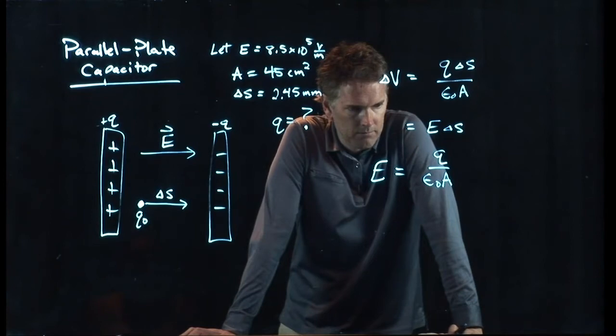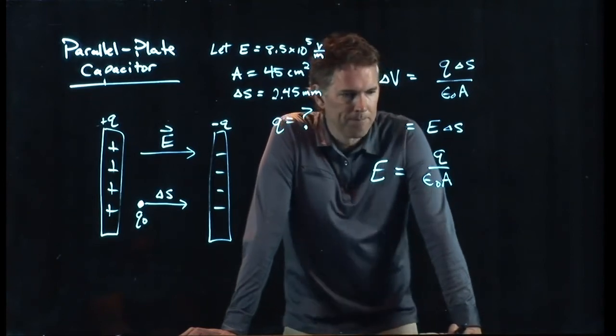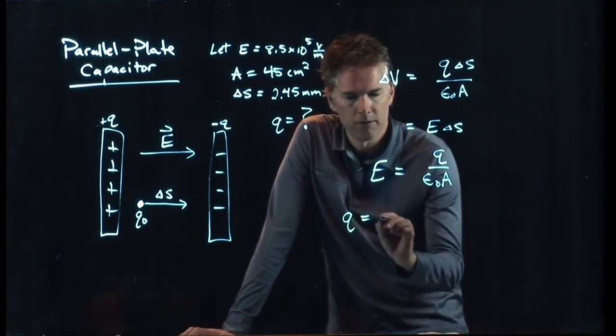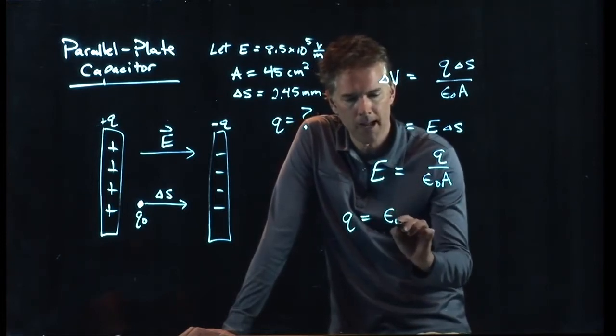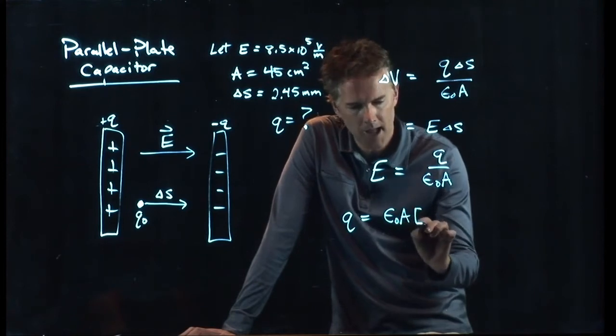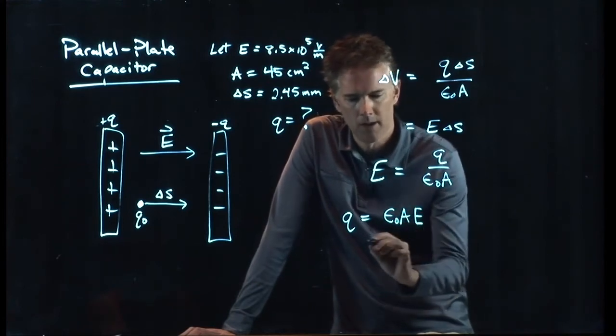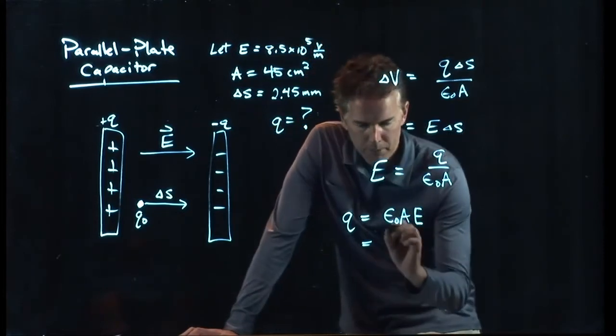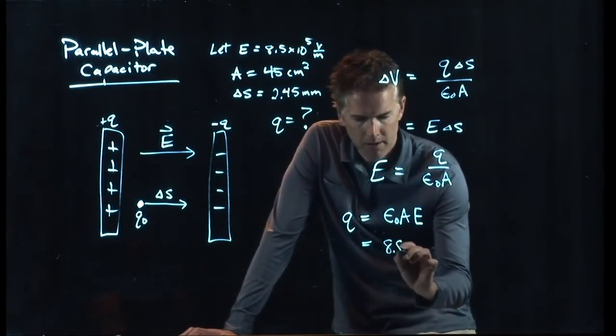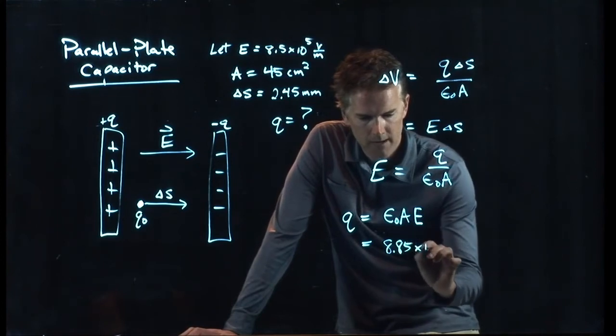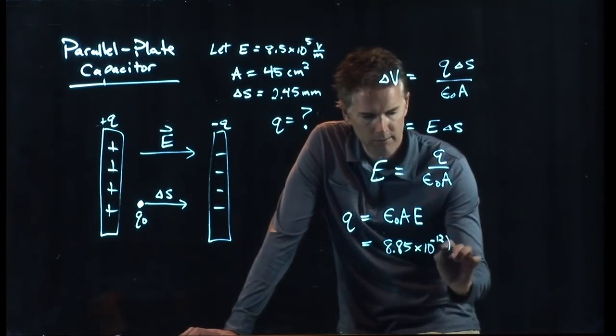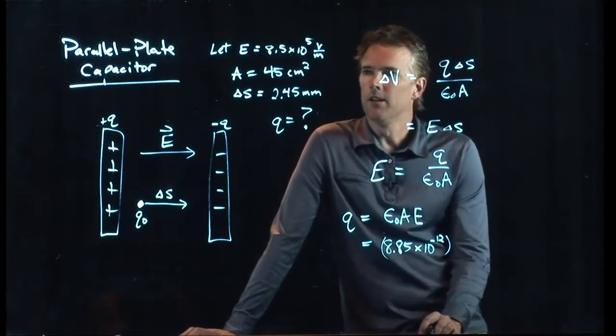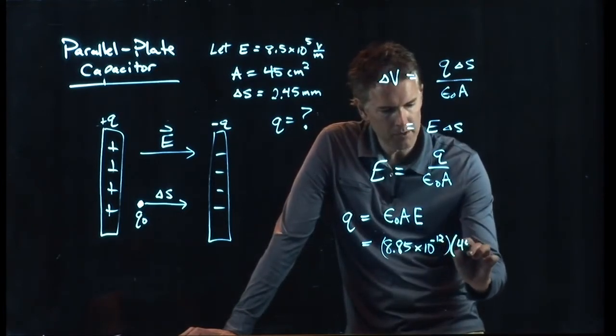Let's put in some numbers and see what we get. We've got Q that we want to solve for. So if I multiply across by epsilon naught times A times electric field, now I can plug in all those numbers. Epsilon naught is the permittivity of free space. That's 8.85 times 10 to the minus 12 in SI units.